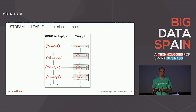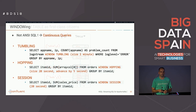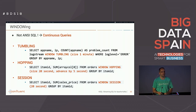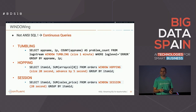You can do joins in both directions — stream-table joins or stream-stream joins, which are now also available. For windowing, KSQL is not like ANSI SQL with request-response queries — it's about continuous queries running long term in your system. Therefore you have additional options: tumbling windows, hopping windows, and session windows, to build different use cases. It's pretty easy to use — just take a look at the documentation and build your application with the windows you need.